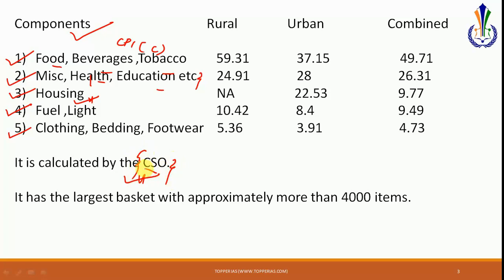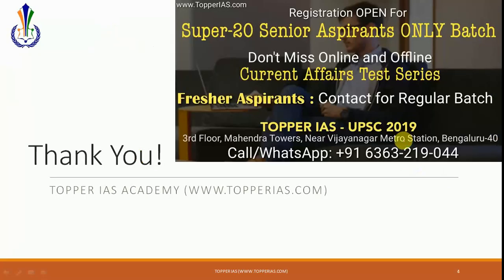CPI is calculated by the Central Statistical Office, unlike the WPI which was calculated by the Economic Advisor. It also has the largest basket with approximately 4,000 items. So CPI has the largest basket, is of more importance, and is the one mainly used. That is the importance of CPI — thanks for watching.